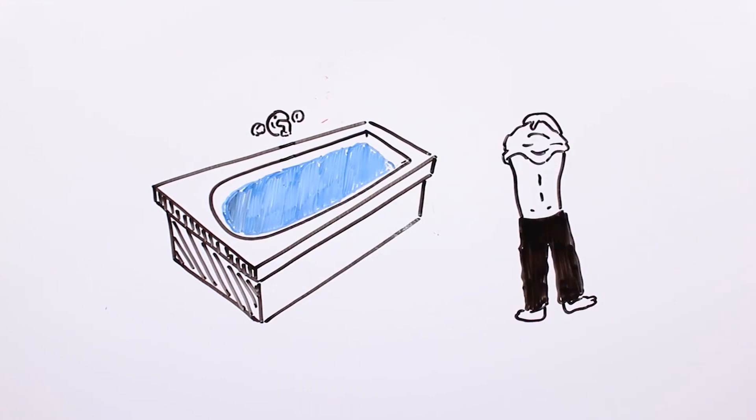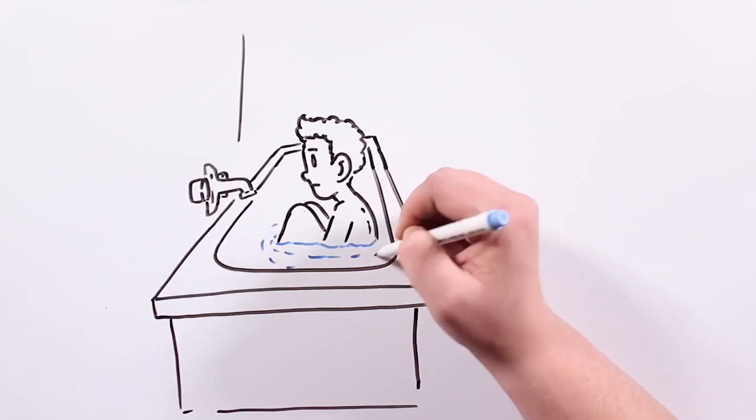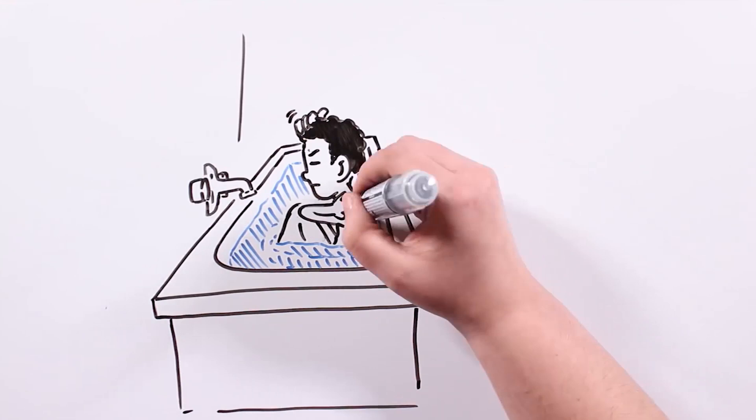Once we have the bathtub full, we undress as we normally do. Turn off the lights and get inside and sit in the middle in front of the tub. We have to close our eyes, and you have to wash your head, neck, shoulders, arms,